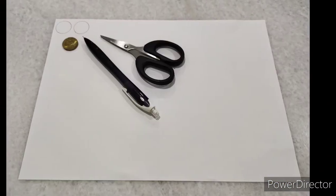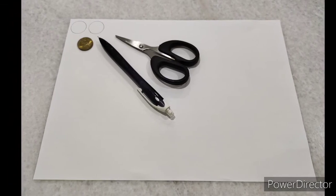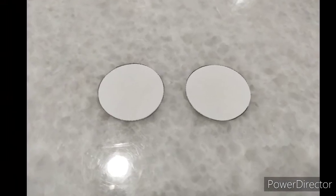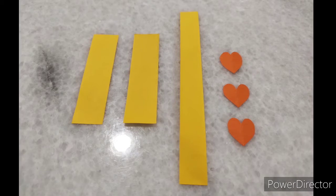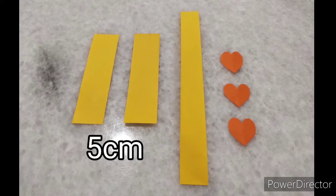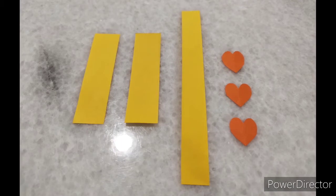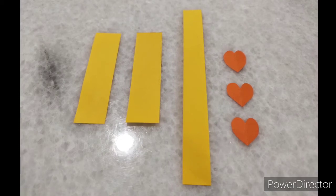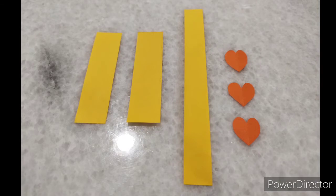Then, draw a smaller circle on white color paper with the smaller coin for the eyes. Cut out like this. Use the balance color papers to cut out two rectangles about 5 cm long for the legs. Cut out three heart shapes for the feet and tail, like this.